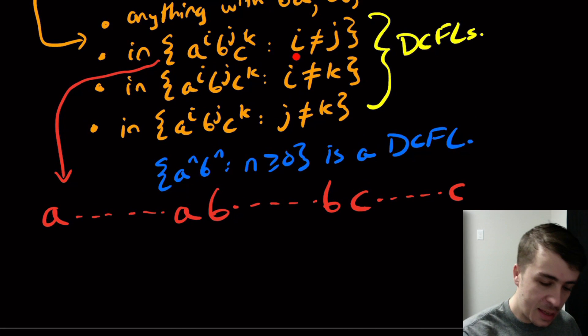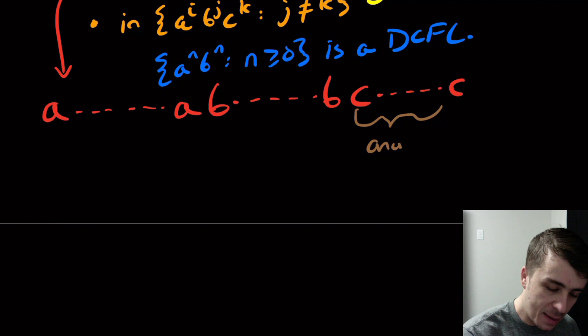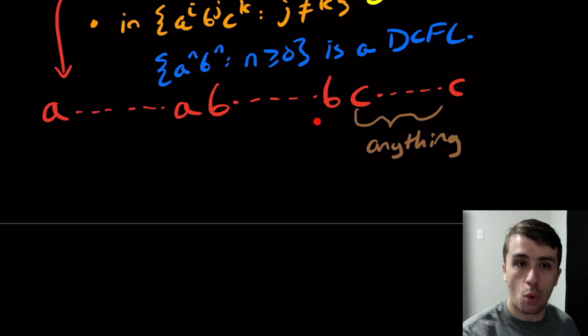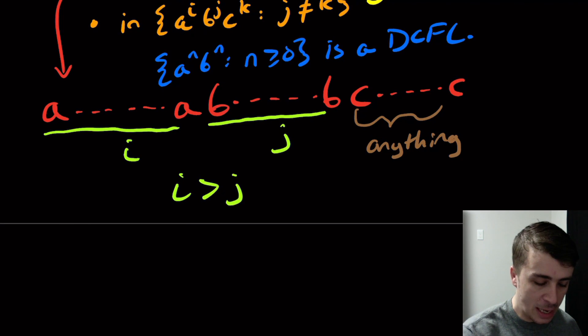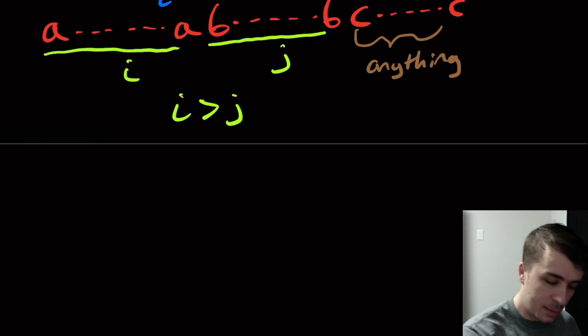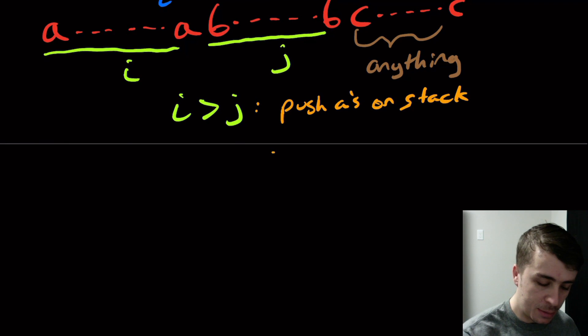So this number right here can be anything. It's just that is either the case that the number of A's is more than the number of B's or less because it's not equal. So let's just say, for example, that this count is i, this count is j, and i is, let's say, bigger than j. Then what do we need to do in this case? We need to push the A's onto the stack and when we get to the B's, start popping in tandem.